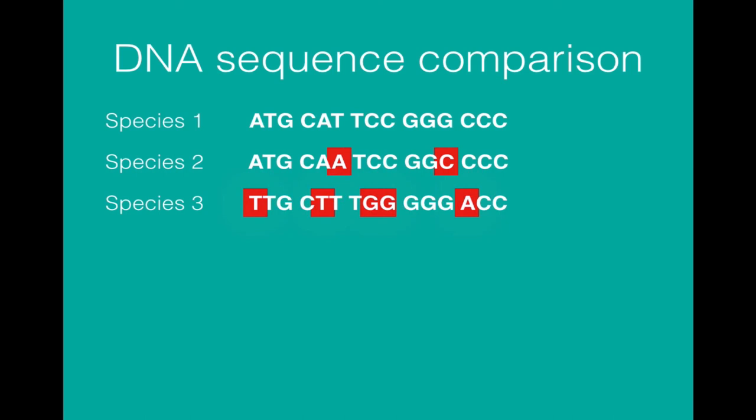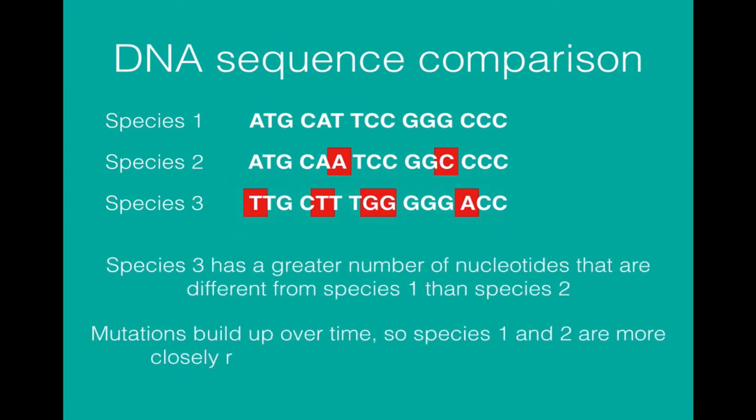In this example you can see that species 2 has two differences with species 1, whereas species 3 has five differences in a sequence with species 1. As a result, we can say that species 1 and 2 are more closely related to each other than species 1 is to species 3.